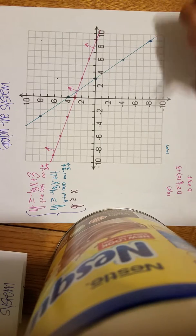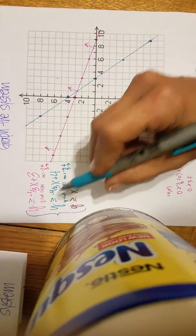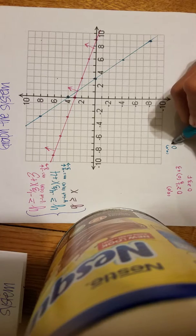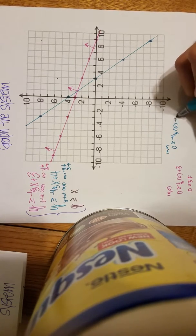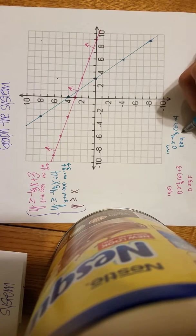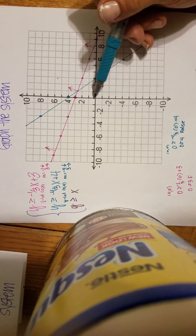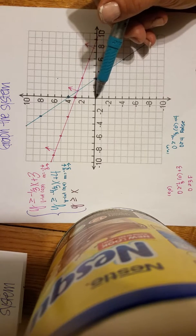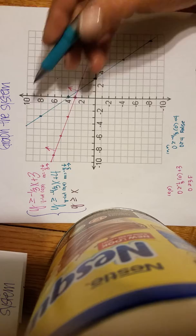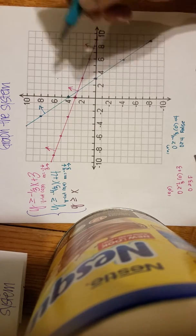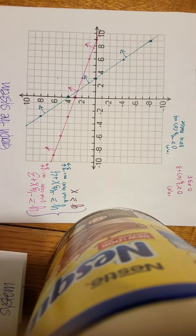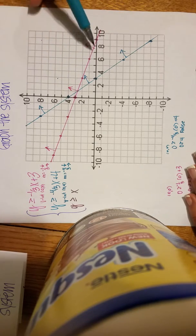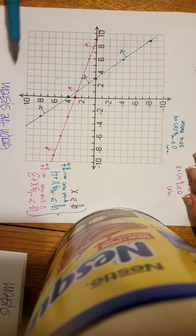Now I need to choose a test point. Again, zero, zero will be a good one. And so in the blue inequality, when I replace Y with zero and X with zero, I get zero is greater than or equal to four, which is false. So the zero, zero side or the left side of the blue line is the false side. Therefore, the right side is the true side. So right now you could see the pink and blue hopefully intersecting up in this area here.